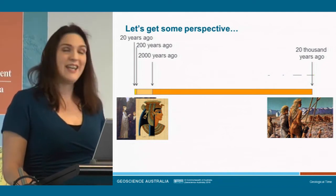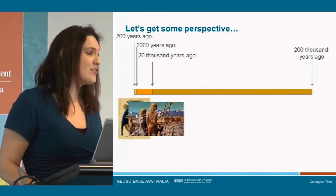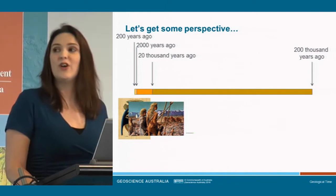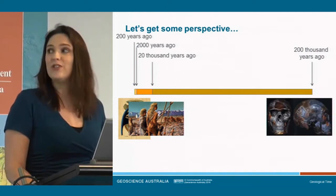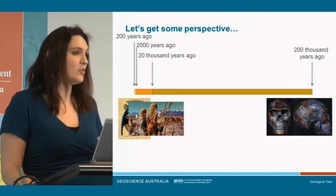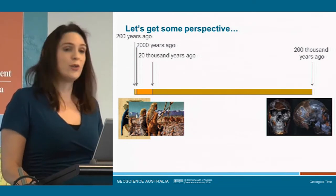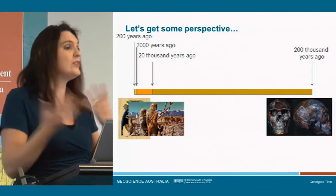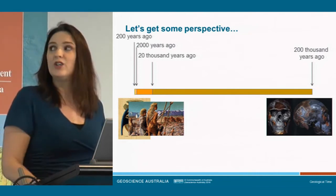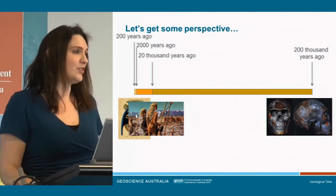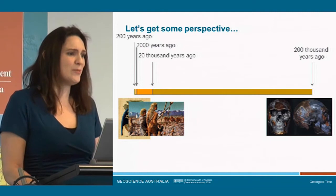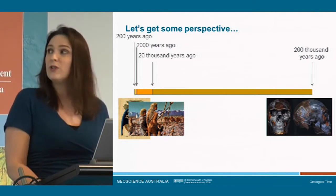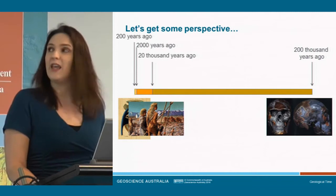Multiply by 10 again and we're talking about 200,000 years ago. That's where we have the first evidence of Homo sapiens — our species, anatomically modern humans, physically the same as we are now. That's how long we've been on the earth. Before that there were no Homo sapiens; we had only evolved by then.